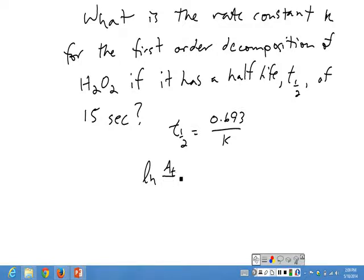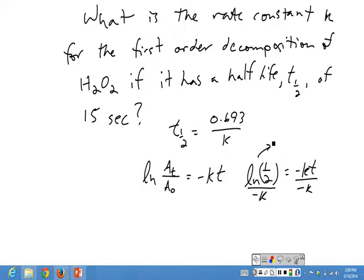ln of At over A₀ equals minus kt. For the special case of a half-life that would be the ln of one-half equals minus kt. If we divide both sides by negative k, we get the ln of one-half over minus k. The ln of one-half itself is minus 0.693 and therefore t will equal 0.693 over k. That would be the first-order half-life expression.